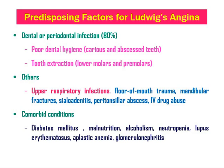Other risk factors include upper respiratory infections, floor of mouth trauma, mandibular fractures, cellulitis, peritonsillar abscess, and IV drug abuse. Comorbid conditions like diabetes mellitus, malnutrition, alcoholism, neutropenia, lupus erythematosus, aplastic anemia, and glomerulonephritis can allow the infection to spread very rapidly to involve the submandibular space.